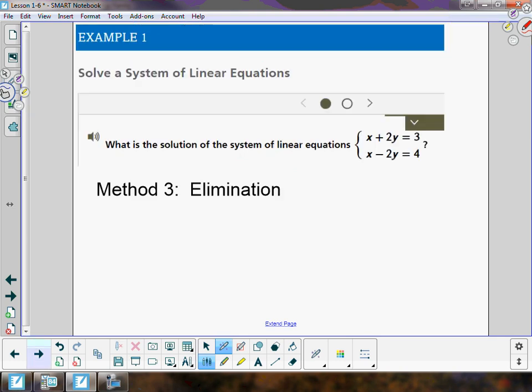Method 3 is elimination. This works pretty well whenever you have a system of equations where, when you look straight down, everything's lined up perfectly. You've got your x's, your y's, your constants over on the right. If you add straight down, x + x is 2x. 2y + (-2y), if we combine these, they go away. We get zero, so you have nothing left there. They eliminate. That's the point.